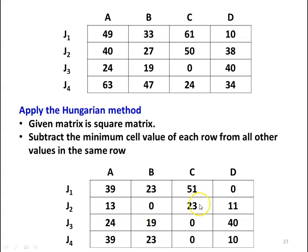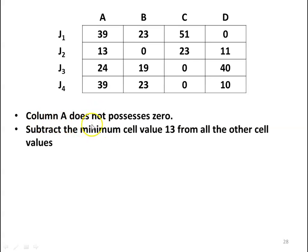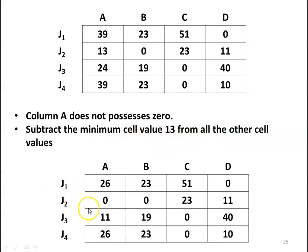Looking at the columns: column A does not have a zero, column B has 1 zero, column C has 2 zeros, column D has 1 zero. Subtract the minimum value of column A (which is 13) from all column A values. The resulting table becomes: 26, 0, 11, 26; 23, 0, 19, 23; 51, 23, 0, 0; 0, 11, 40, 10.